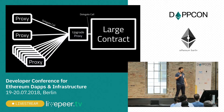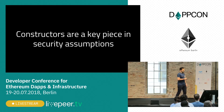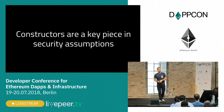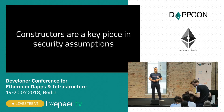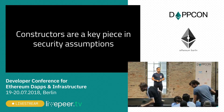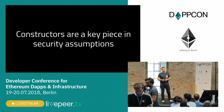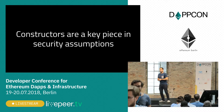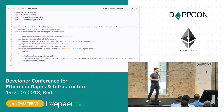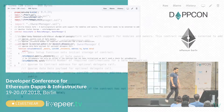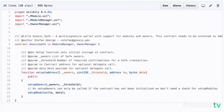Another thing I was thinking about is that when you have a proxy, you cannot make use of a constructor. And since we're here, hosted by Gnosis, I took the Gnosis Safe as an example. What you have to do is have a setup function that you can call within the same transaction, acting as a constructor.